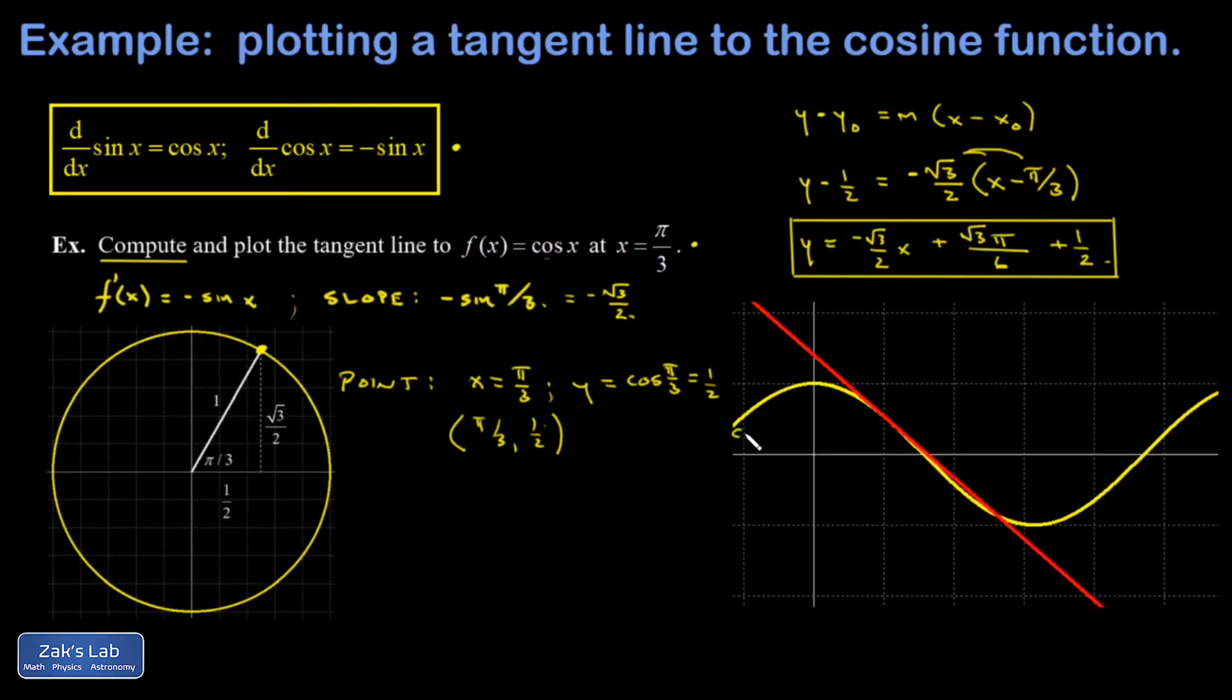So in yellow, we have the familiar cosine function. In red, we have the equation of our tangent line. And I can verify qualitatively anyway, it looks like it's touching the curve of the cosine function at exactly one point. And that's happening at an x value that's pretty close to 1. And well, pi over 3 is pretty close to 1 because pi is just a little more than 3. So I'm convinced that we have the correct equation of the tangent line.